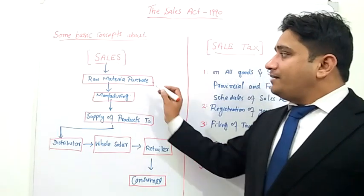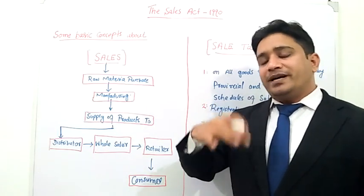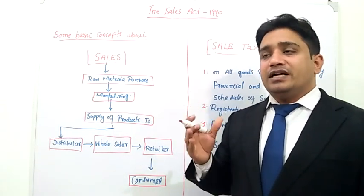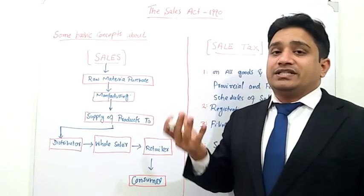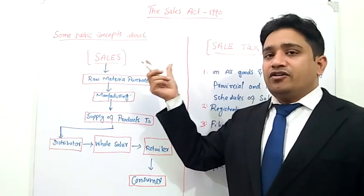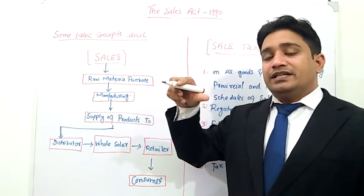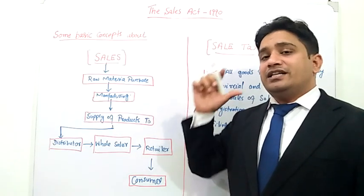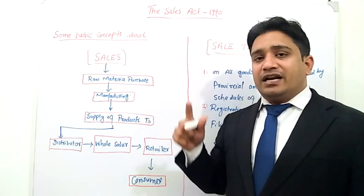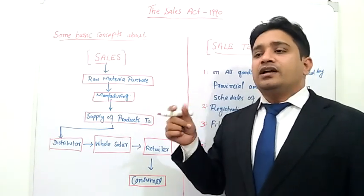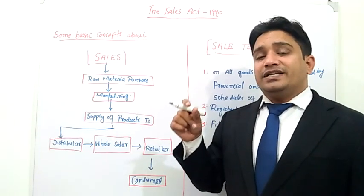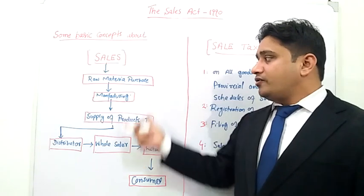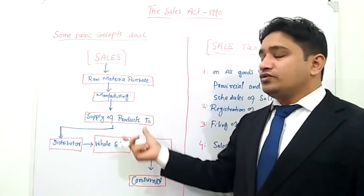Sales — where does it start? Basically, sales starts from your business purpose, where you make a raw material purchase. So the sales tax concept starts when you purchase raw material, manufacture a product, and then sell it. The supply procedure is discussed at each stage, from raw material to the final product.